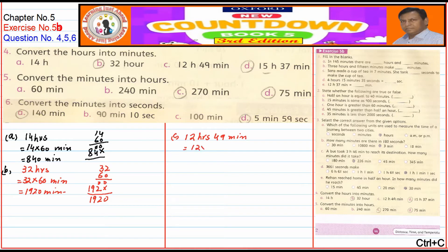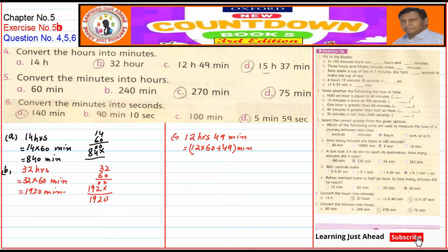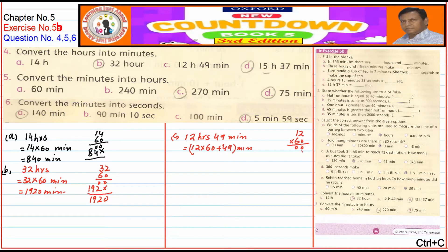Part C: 12 hours 49 minutes. We multiply 12 by 60, then add 49. 12 × 60 = 720, and 720 + 49 = 769 minutes.